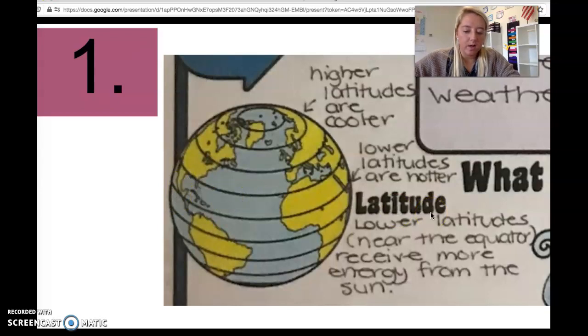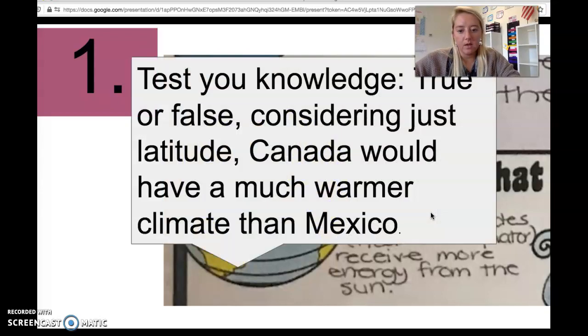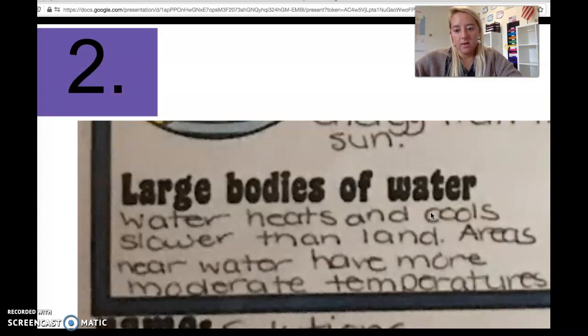Number two for climate determination: large bodies of water will play an impact on the climate. You might not realize that, though it is affecting you definitely with the ocean being so close to you. Water heats up and cools slower than land. That means areas that are near water have a more moderate temperature. For example, I used to live in the Great Lakes region of Ohio and I would have, because I was close to the lake, a warmer climate than say my folks in central Ohio like Columbus.